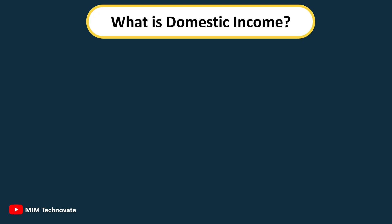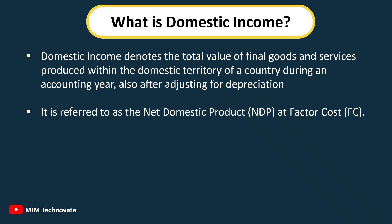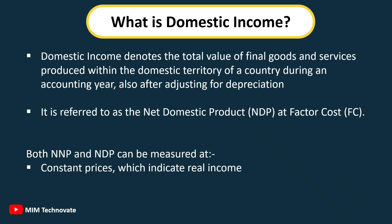Domestic Income denotes the total value of final goods and services produced within the domestic territory of a country during an accounting year, also after adjusting for depreciation. It is referred to as the Net Domestic Product, NDP, at Factor Cost, FC. Both NNP and NDP can be measured at constant prices, which indicate real income, or at market prices, which indicate nominal income.